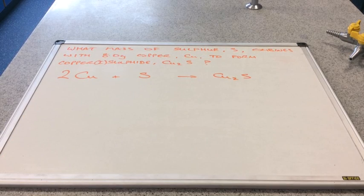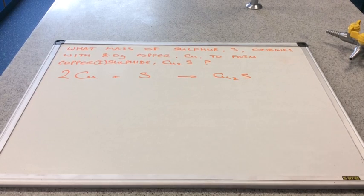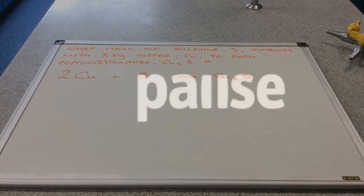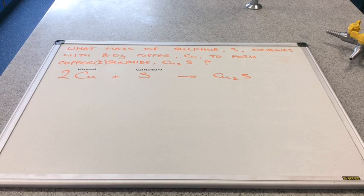Now let's look at this question: what mass of sulphur combines with 8 grams of copper to form copper(I) sulphide Cu2S according to this equation? Press pause if you want to have a go. The known substance is copper and the unknown substance is sulphur.